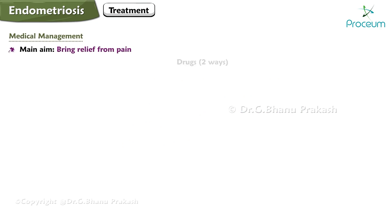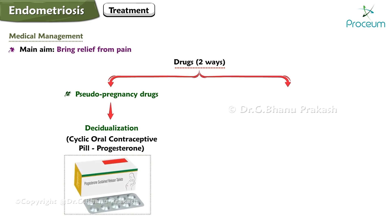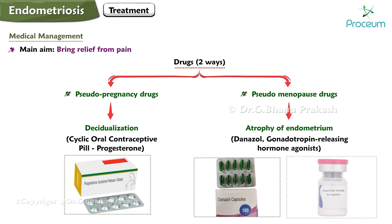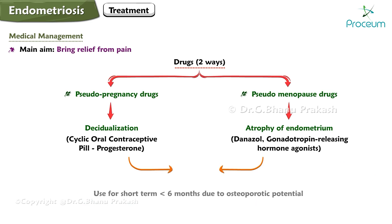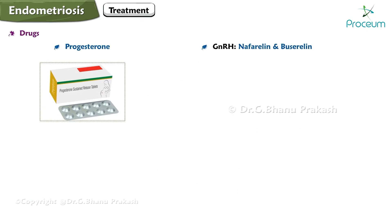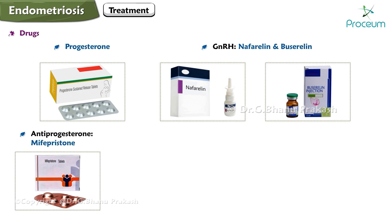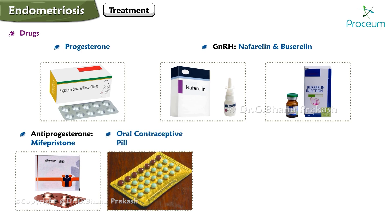Medical management aims primarily to bring relief from pain. Drugs work in one of two ways: pseudopregnancy — drugs that bring about decidualization, for example cyclic oral contraceptive pills or progesterone; or pseudomenopause — drugs which bring about atrophy of the endometrium, for example danazol or GnRH agonists. GnRH agonists are used short-term (less than six months) due to their osteoporotic potential.